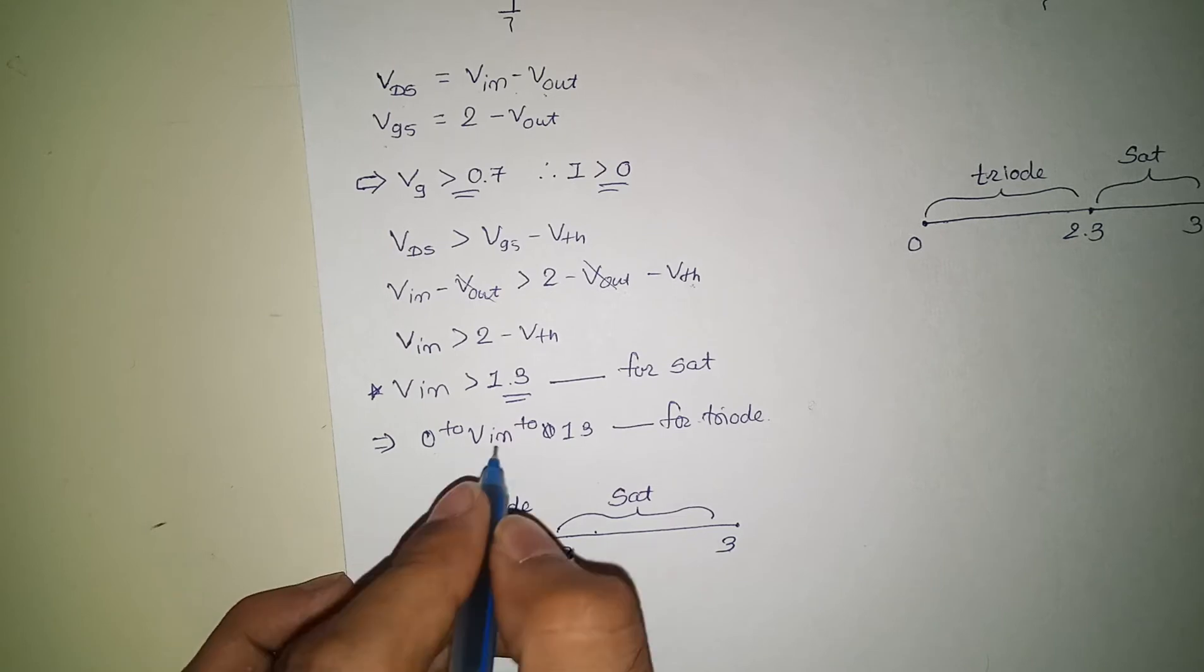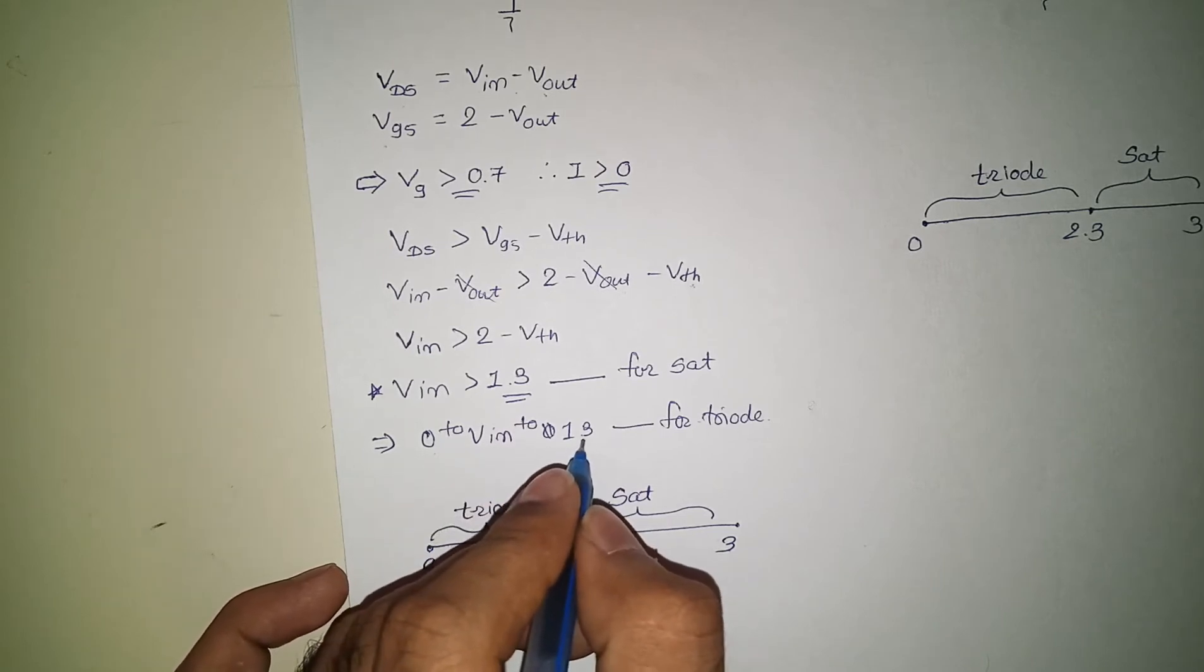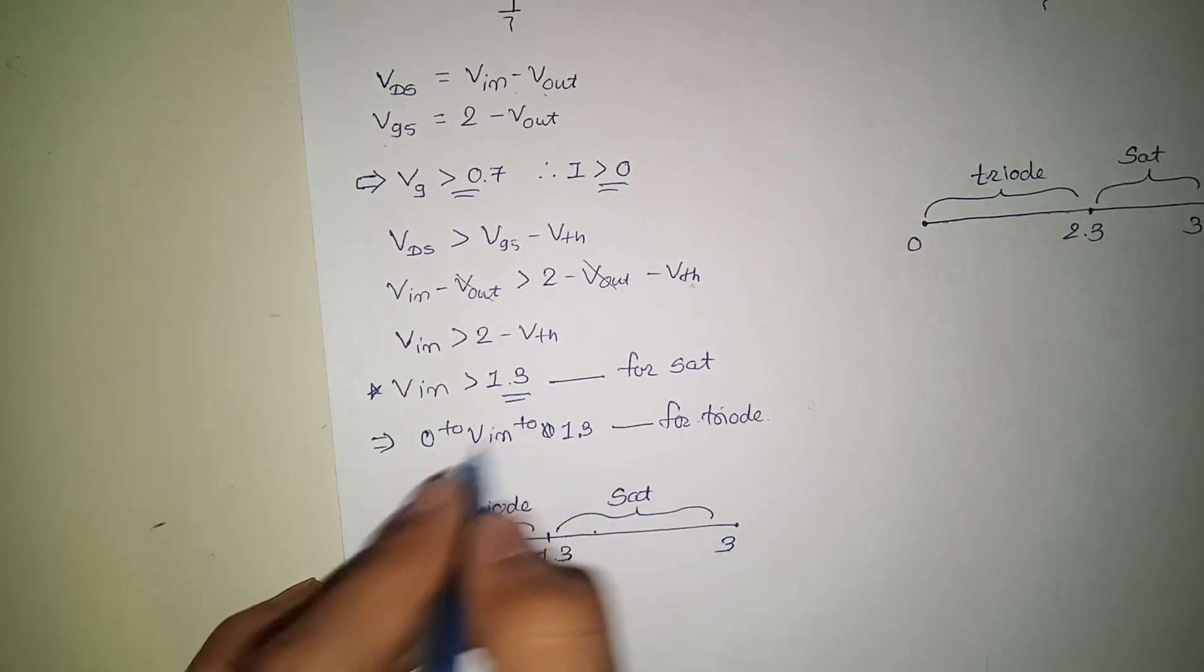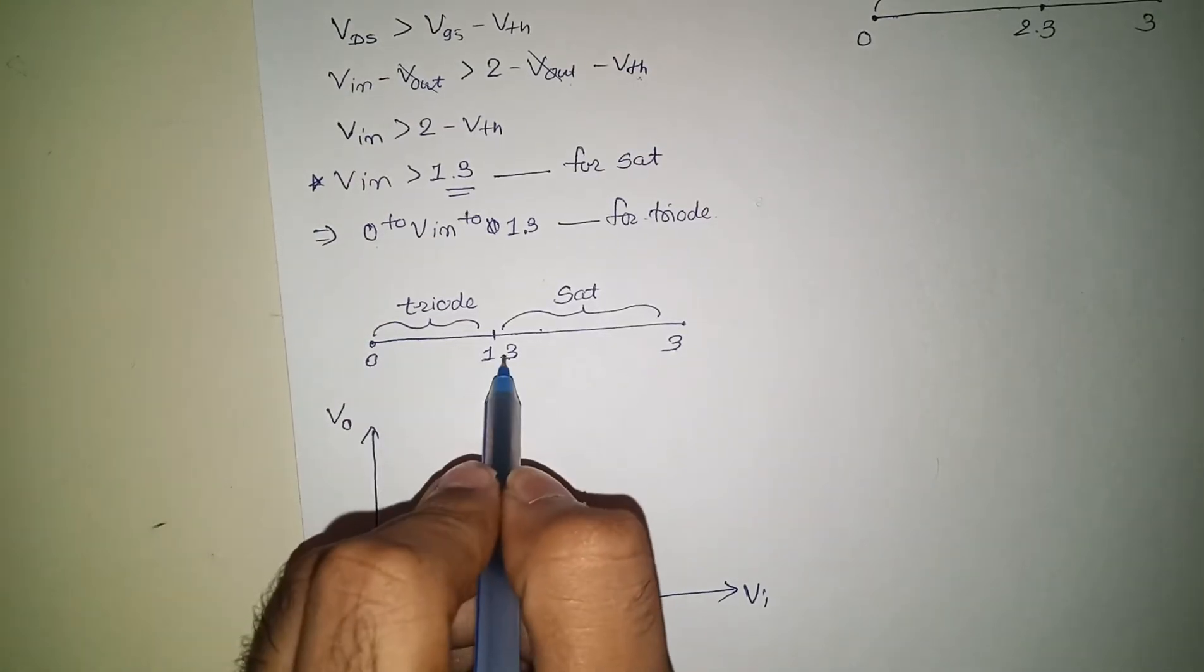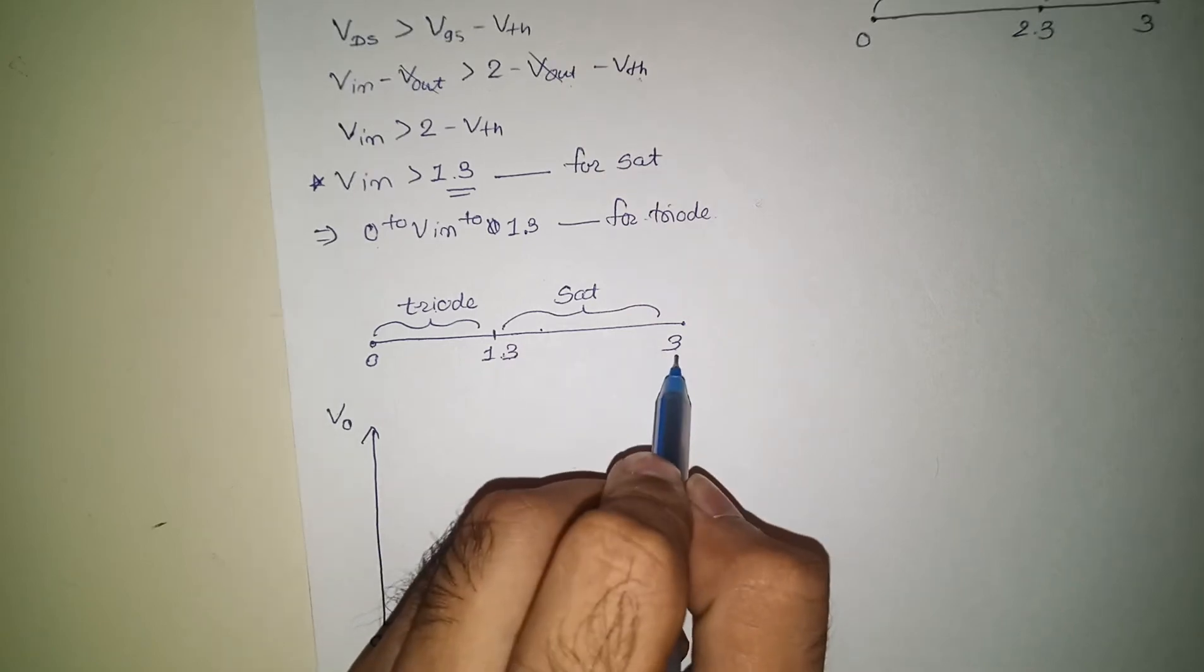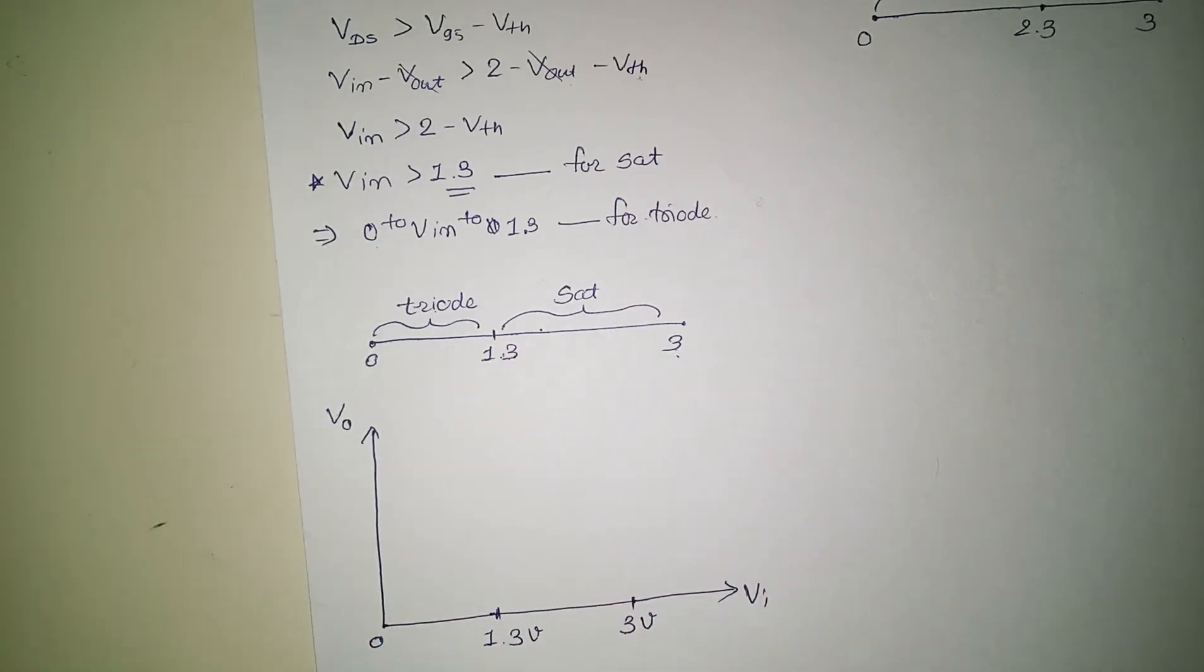But 0 to Vin to 1.3, what I mean for this range, this MOSFET will be in triode region. So from 0 to 1.3 is triode, from 1.3 to 3 is saturation.